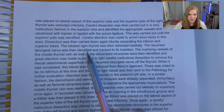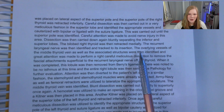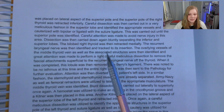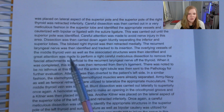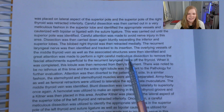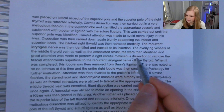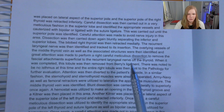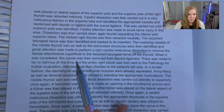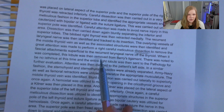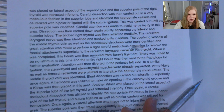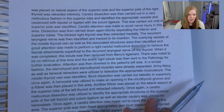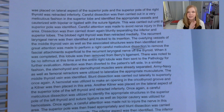The recurrent laryngeal nerve was then identified and tracked to its insertion, because we don't want to accidentally nick any nerves. The overlying vessels of the middle thyroid vein and associated structures were identified, and great attention was made to perform careful, meticulous dissection to remove the fascial attachments superficial to the recurrent laryngeal nerve off the thyroid. When completed, this lobule was removed from Berry's ligament. There was noted to be no isthmus, and the entire right lobule was sent to pathology.